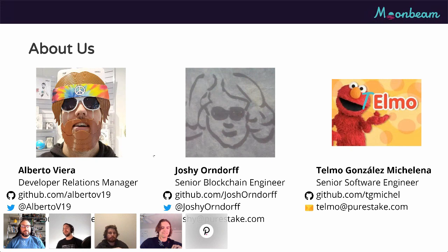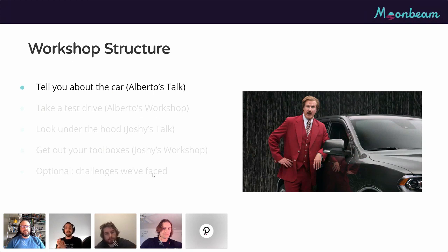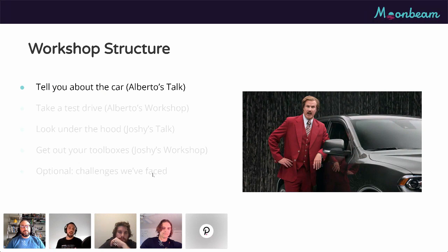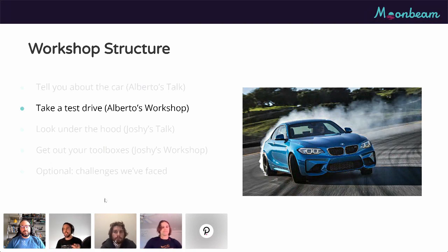Before we head into the presentation, let's talk about the workshop structure. We are building an Ethereum-compatible parachain using Substrate and Frontier. Rather than diving directly in, we decided to do an analogy with a car — the car being more or less Frontier. The first part will be high-level definitions about Frontier, its components, and then I'll take you for a test drive to get hands-on with how Frontier feels on a Substrate-based chain.